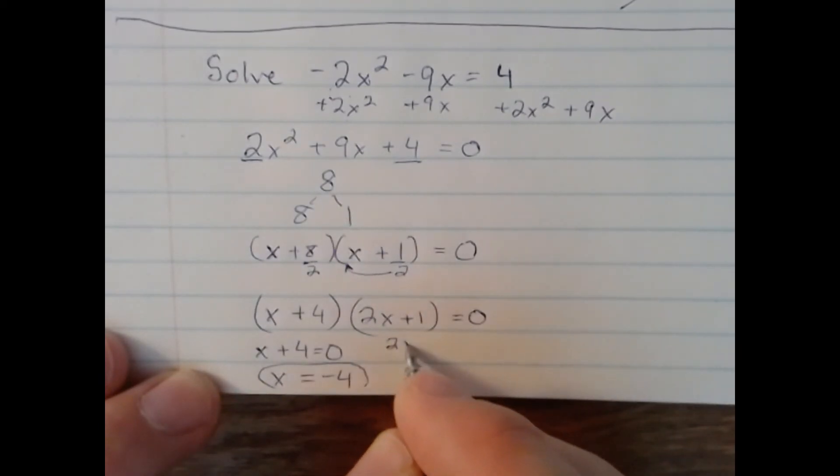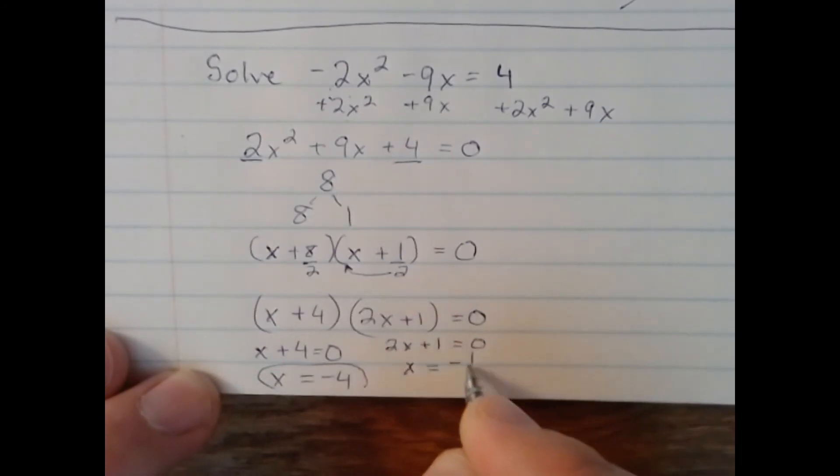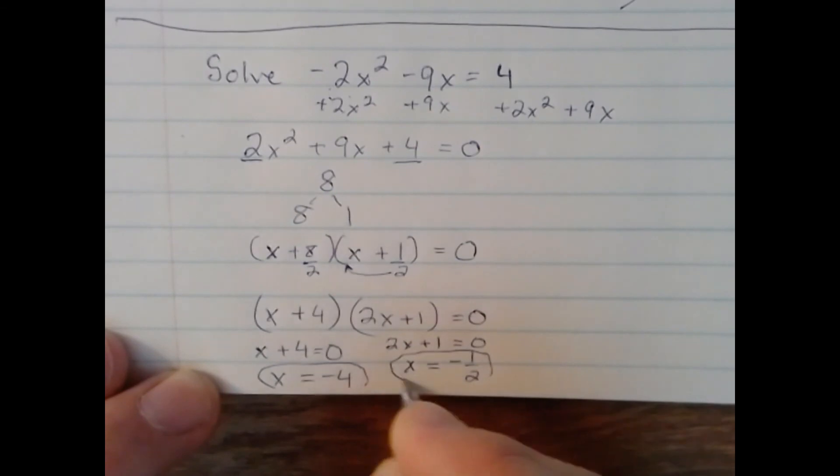This other one, 2x+1 = 0. I subtract 1, divide by 2. x = -1/2. And that is my other answer.